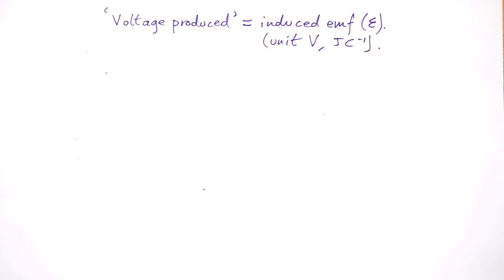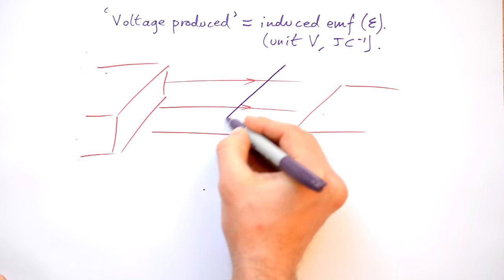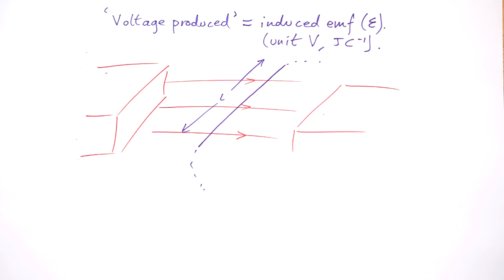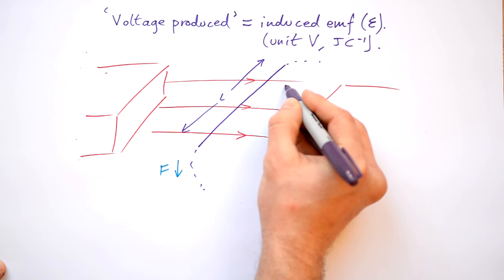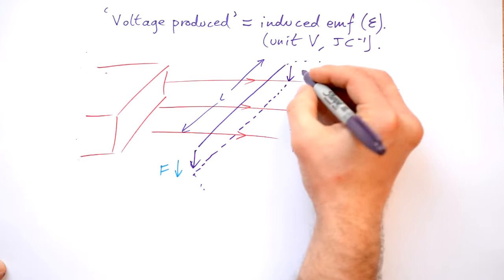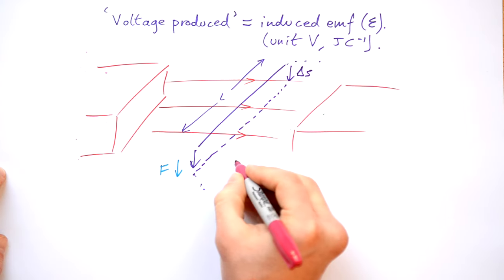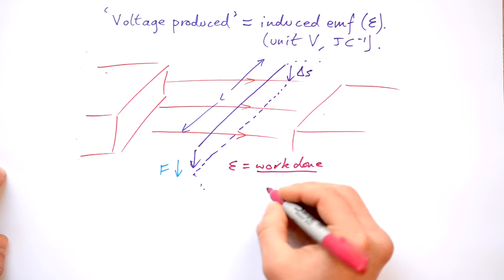How much energy is supplied to each coulomb of charge. So let's just get a magnetic field and let's have our piece of wire of length L that is part of a circuit, but we're only interested in the length of the wire that's in the magnetic field. Let's say that we push this wire downwards with a force F. We're going to push it down to here, so it's gone that distance there — we're going to call this delta S, S being displacement. So we've moved it through a distance delta S. Now we know that EMF is work done — and again that's energy — divided by charge.